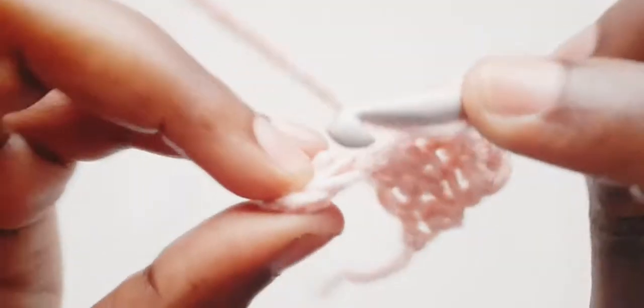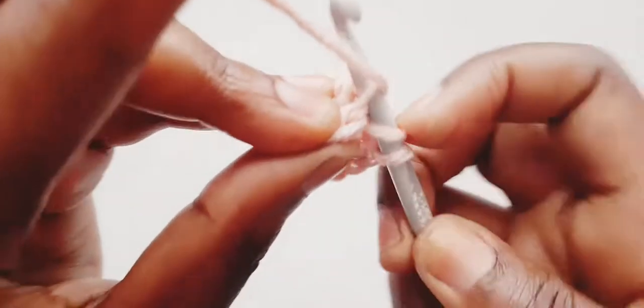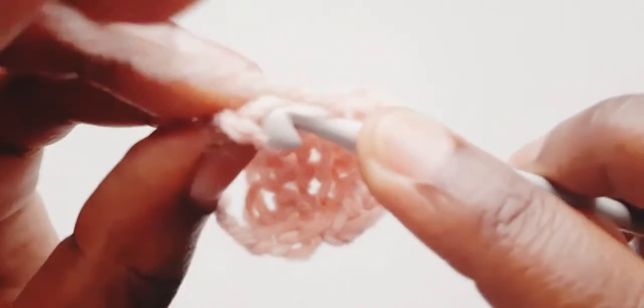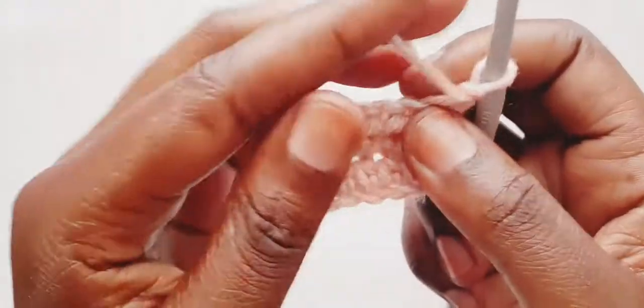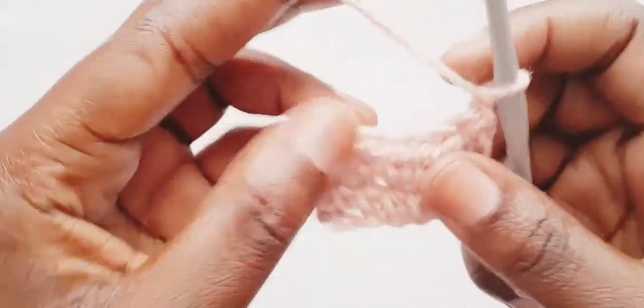Two, three, four, five, six, seven. Okay, so at the end we chain one, turn our work. So we are going to repeat the same pattern until we have six rows in total. Okay, so we'll meet back here once we've done that.